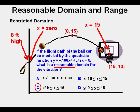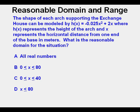Here is another problem, this one from the test. The shape of each arch supporting the exchange house can be modeled by h(x) = -0.025x² + 2x,